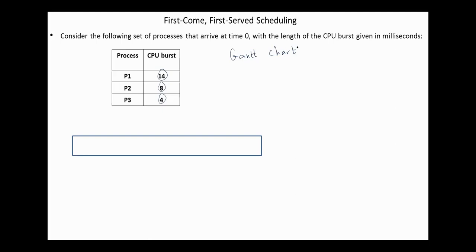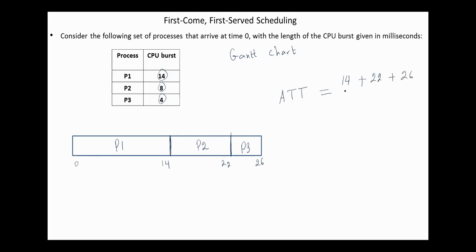Since all the processes are in the queue, in first-come-first-served we start first with Process 1, which ends at time 14, after that Process 2 ends at time 22, and the last one is Process 3, which ends at time 26. The average turnaround time equals: Process 1 takes 14 milliseconds, Process 2 ends at time 22, and Process 3 at time 26, which gives 62 over 3, which is 20.7.